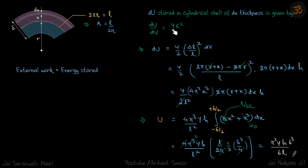So dU by dV is equal to Y strain square by 2, our standard formula. So this is the dU stored in a cylindrical shell of dx thickness. So yeah, of course not a ring, it's a cylindrical shell because it's going inside the plane also. And I've just drawn a part of it, so if I draw the circle it will become quite complicated.